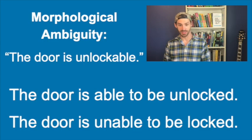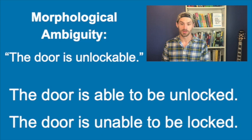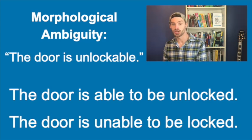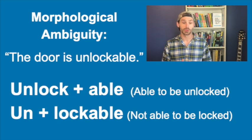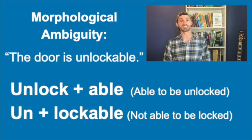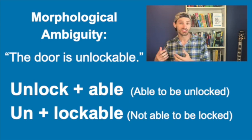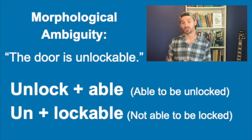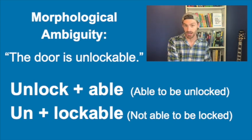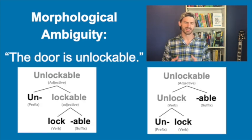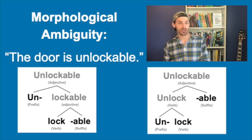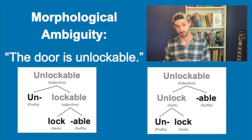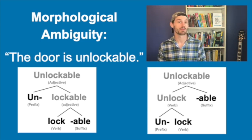In morphological ambiguity, the hierarchy of morphemes within a word is not clear, such as in the word "unlockable," which could mean either "able to be unlocked" or "unable to be locked" — two very different things. The root of the word is "lock," but there's also the prefix "un" and the suffix "able," and there's no hint to tell us which affix should be viewed as more central to the meaning. Take a minute to look at these diagrams — it should make clear how the meaning of "unlockable" changes as the internal hierarchy of the morphemes changes. For more information on this, check out my Morphology 101 video.